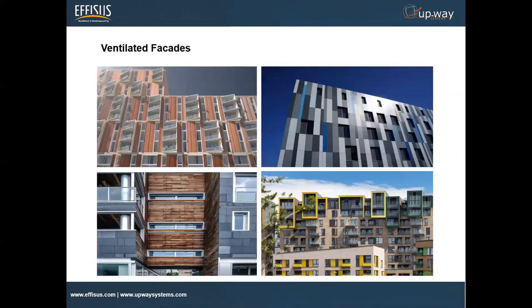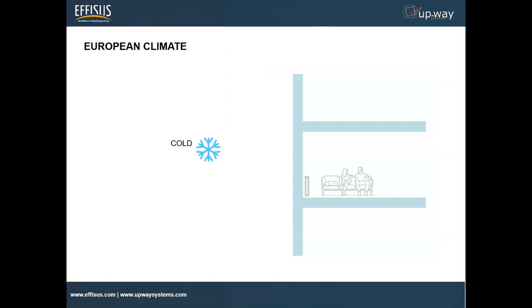Ventilated facades — here we have four examples. As you know, it is a facade construction with an air gap between the insulation and the facade cladding. This creates a way for natural ventilation and protects the building against the weather, while at the same time creating a healthy indoor climate. In the European climate, we typically have a warmer temperature on the inside of the building and colder weather on the outside.